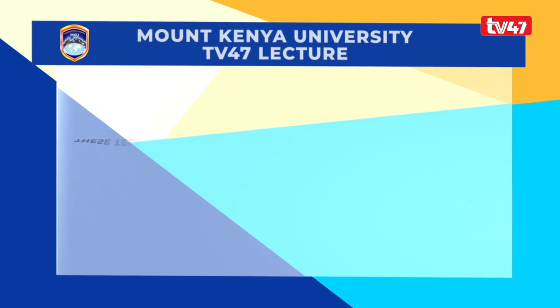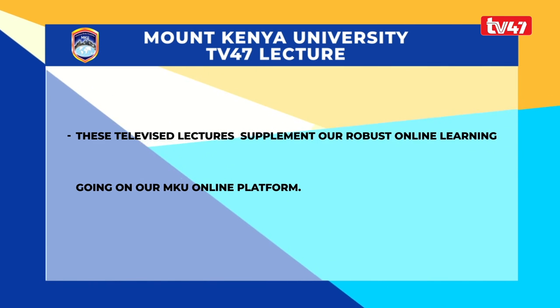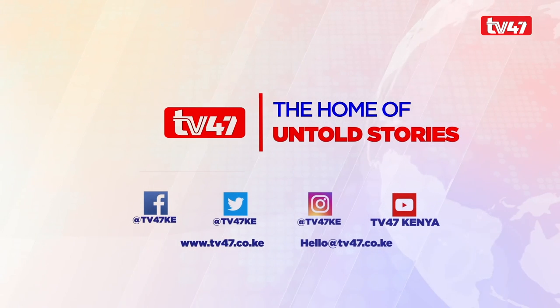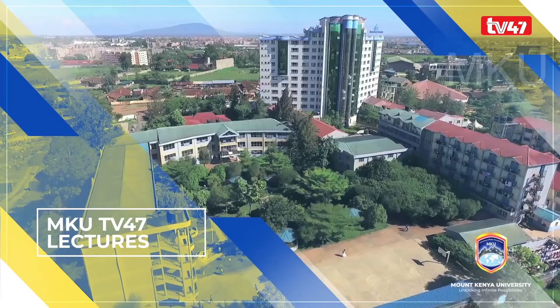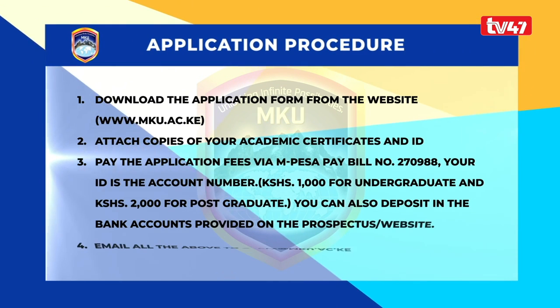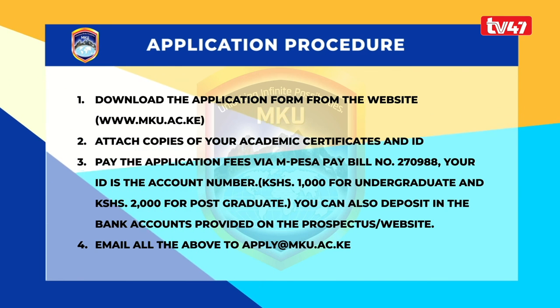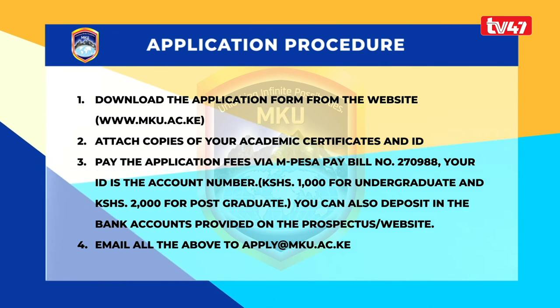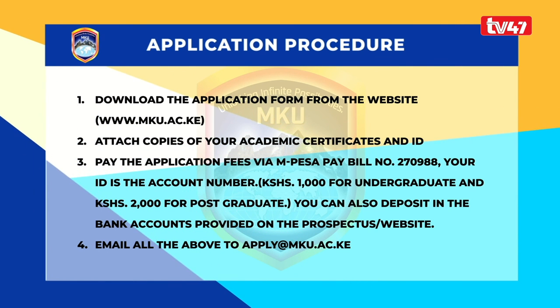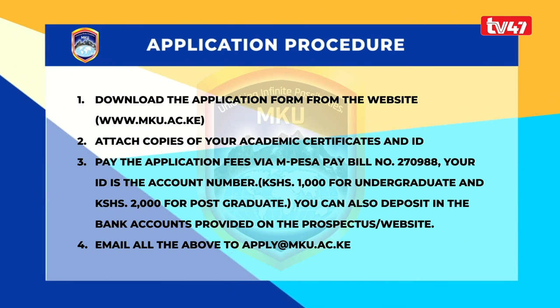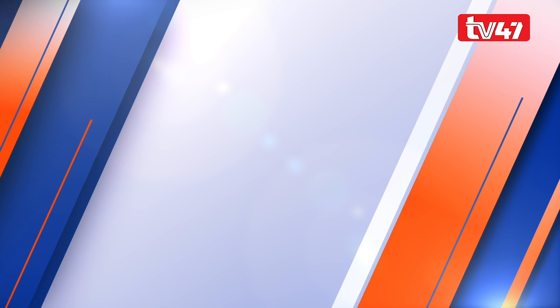These televised lectures supplement our robust online learning on our MKU online platform. You can view more televised lectures via our online platform. To complete your online application: download the application form from the website www.mku.ac.ke, attach copies of your academic certificates and ID, pay the application fees via M-PESA pay bill number 270988 — your ID is the account number and 2,000 shillings is the charge for a postgraduate. You can also deposit in the bank accounts provided on the website, then email all the above to apply at mku.ac.ke.